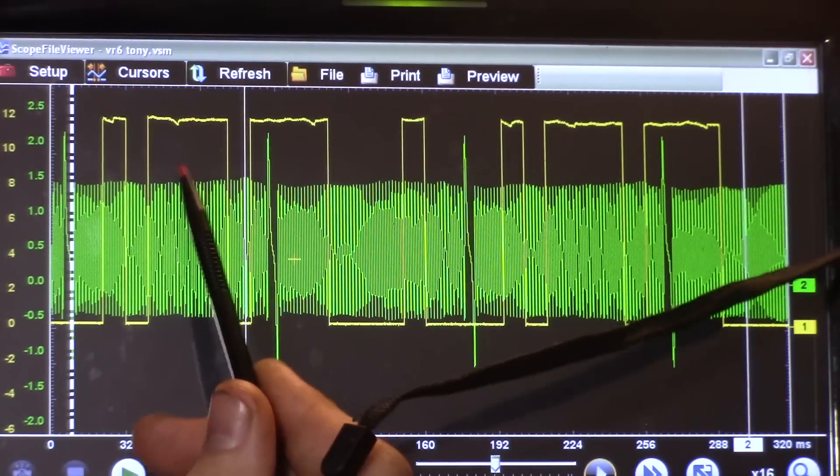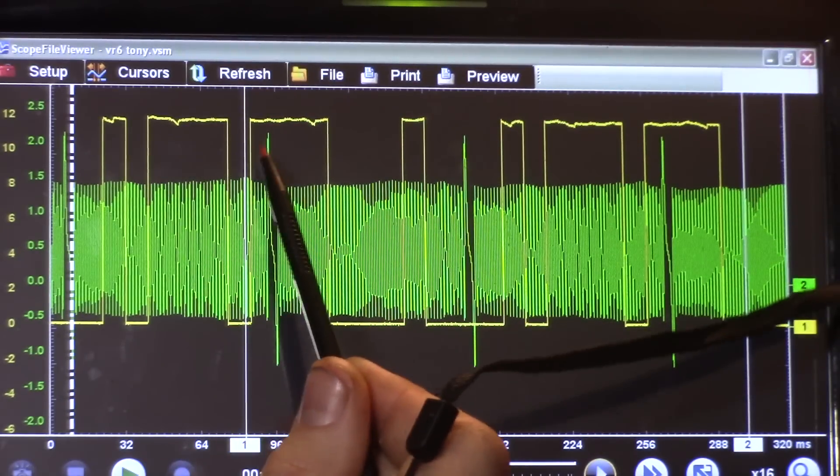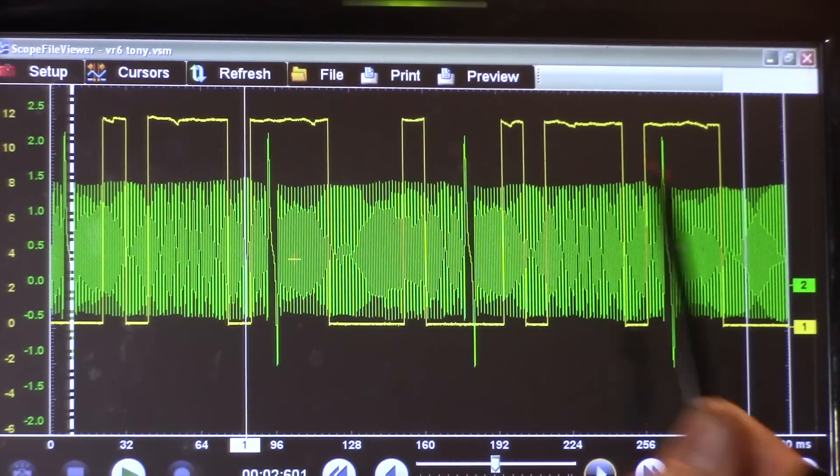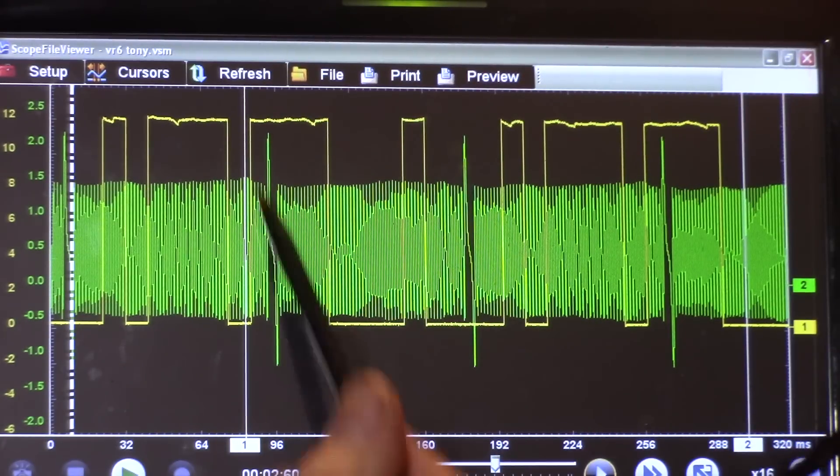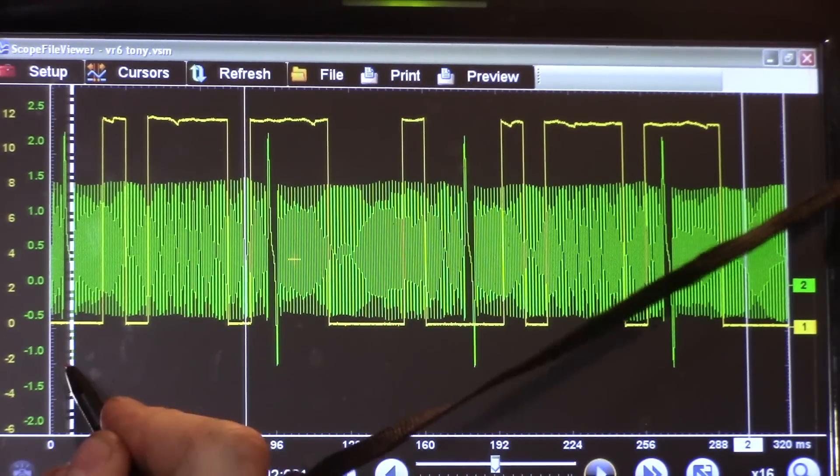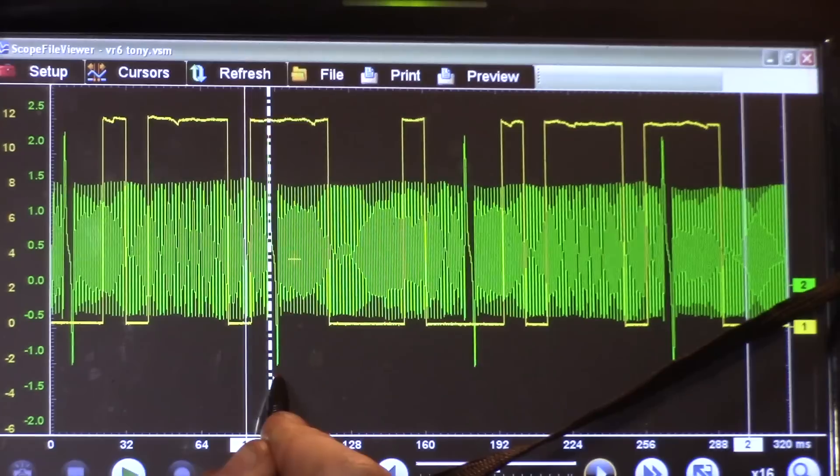We have, with the cam signal, two big teeth, and then two small teeth, and then two big teeth again. I want to focus on this second big tooth where it crosses over this crank sync. And I just want to zoom in a little bit on that.